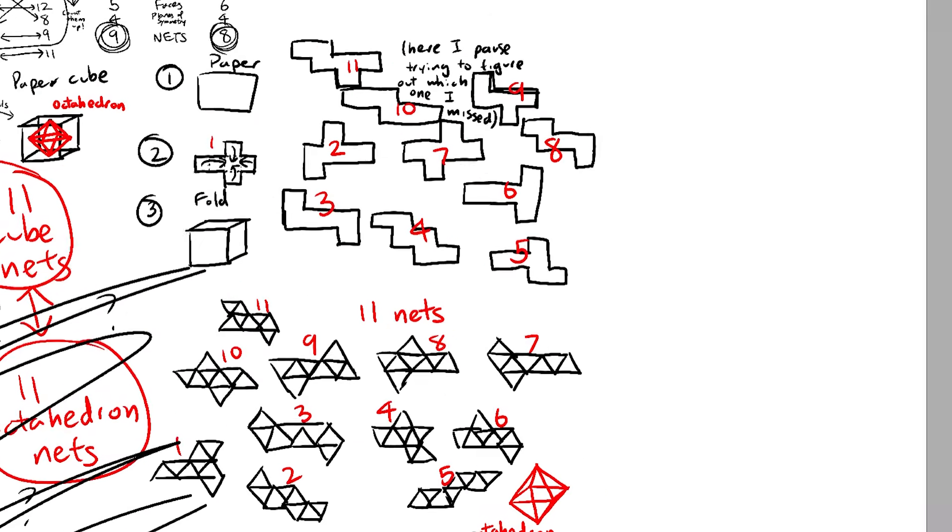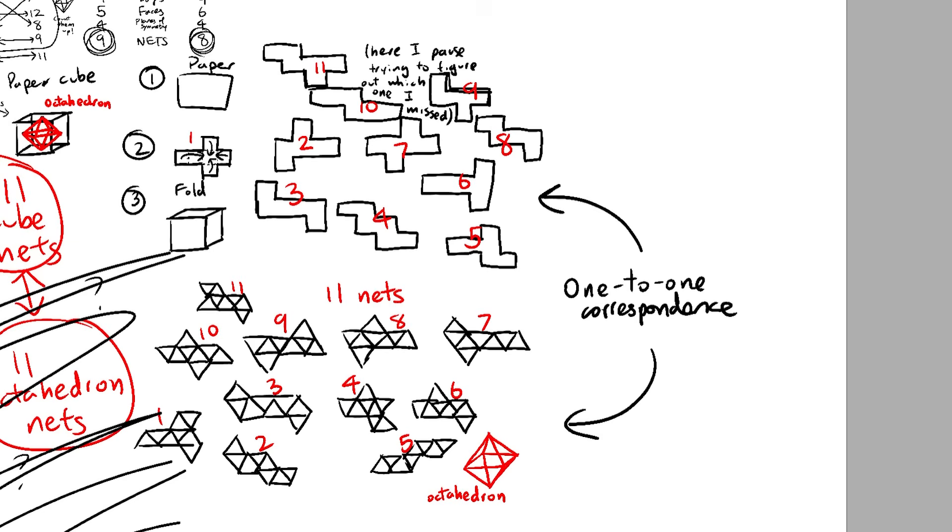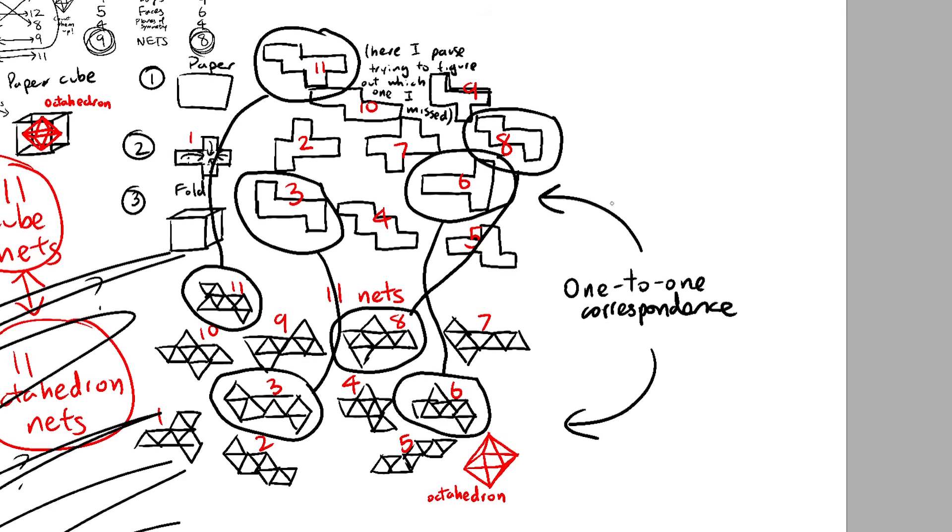Right now my only lead is to try and find a one-to-one correspondence. What that is, is a way to match cube nets to octahedron nets. If we can match all the cube nets to one octahedron net each, then we'll know there is the same number of both.